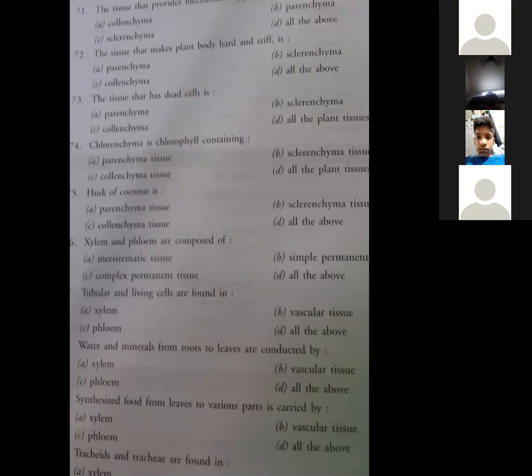Husk of coconut is - the outer covering is hard, so it's made of sclerenchyma. All students, I feel you can understand. Do it right. Next one - xylem and phloem are composed of simple or complex? We understand this very clearly - complex permanent tissue will come in xylem and phloem.